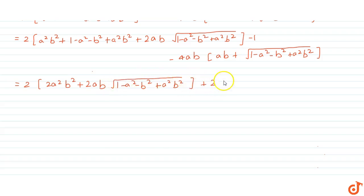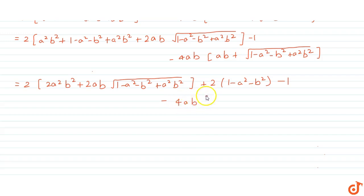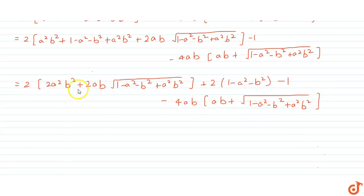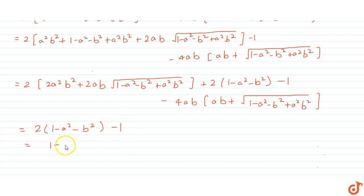Splitting the bracket, we see that the 4a²b² and 4ab·√(1 - a² - b² + a²b²) terms from the first bracket and the second bracket have the same values with opposite signs, so they cancel. We are left with 2(1 - a² - b²) - 1 = 1 - 2a² - 2b², which equals the right-hand side. Hence the identity is proved.